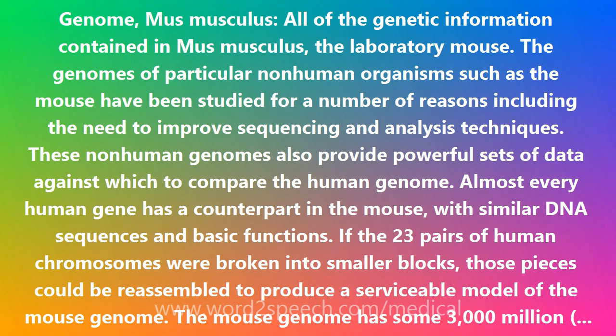If the 23 pairs of human chromosomes were broken into smaller blocks, those pieces could be reassembled to produce a serviceable model of the mouse genome. The mouse genome has some 3,000,000,000 base pairs and is estimated to have at least 50,000 genes.